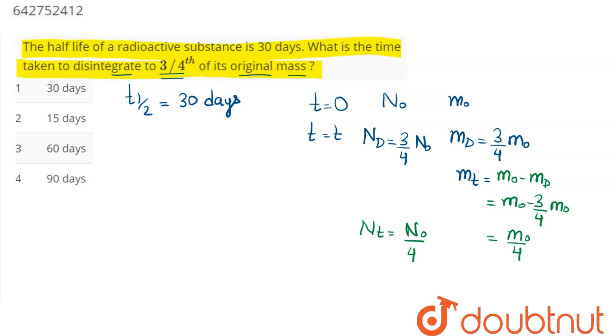So at t equals 0, the number of active nuclei is N₀. After one half-life, the number of active nuclei remaining is N₀ by 2. After one more half-life, that is after two half-lives, the number of active nuclei will be half of N₀ by 2, which is N₀ by 4. In the question, it is asked that the active nuclei must be N₀ by 4.